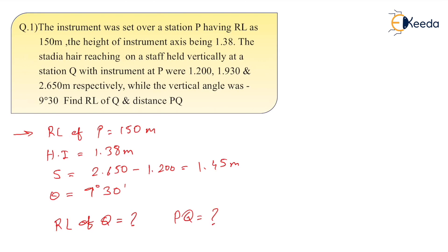To start with the problem, let us draw the solution first. So we have a point, that is point P, over which the instrument is set up. This is your instrument axis.